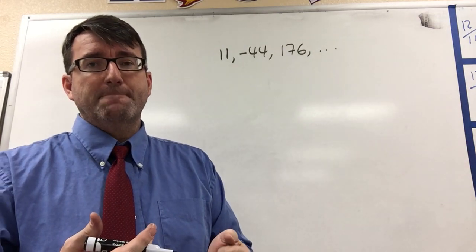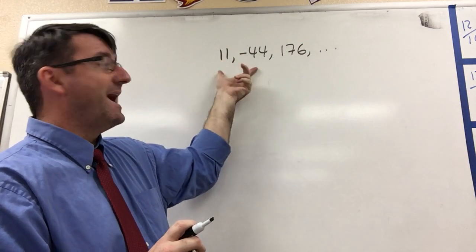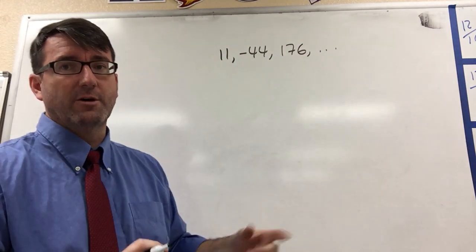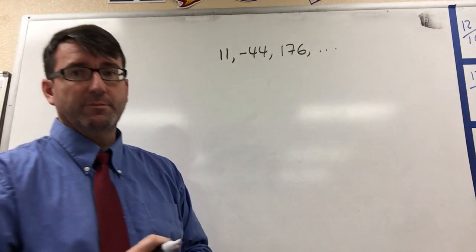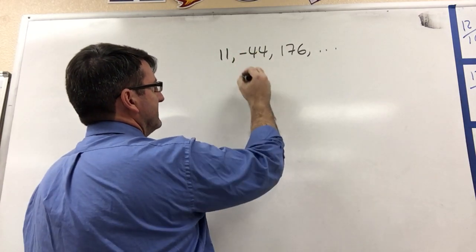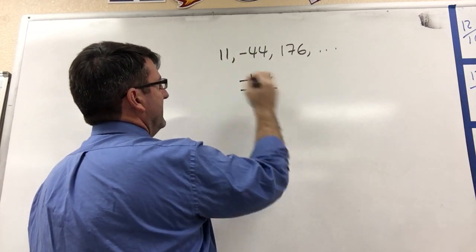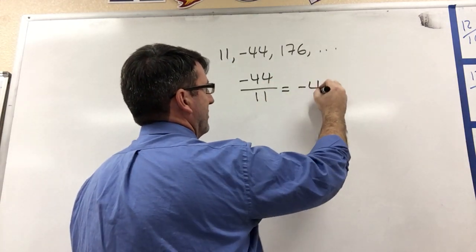Notice that this is a geometric sequence because we're not adding the same number to get to the next term. We're multiplying by the same number to get to the next term. To figure out what number that is, we'll take the second term, negative 44, and divide it by the first. So negative 44 divided by 11 is negative 4.